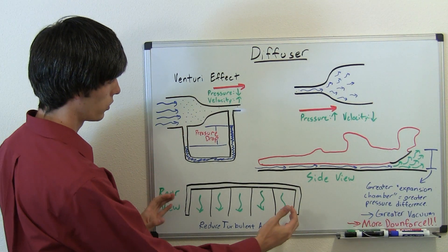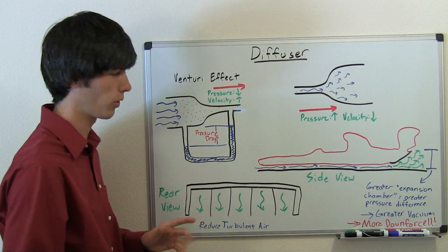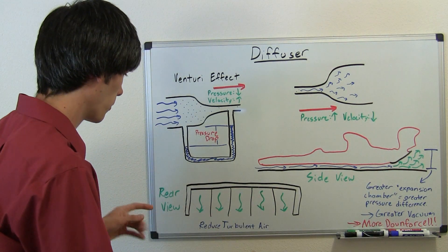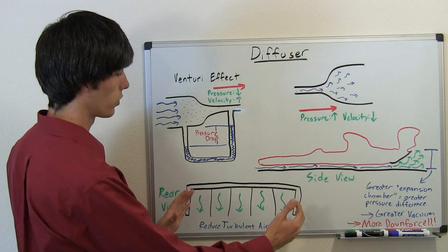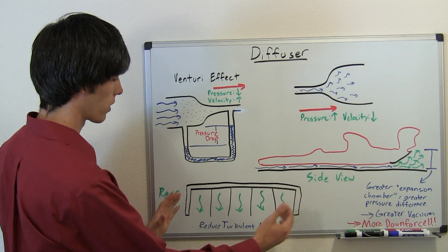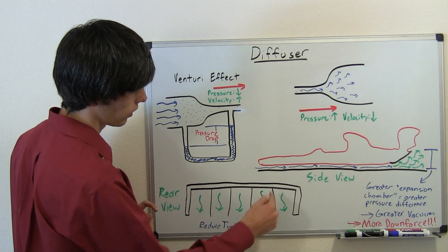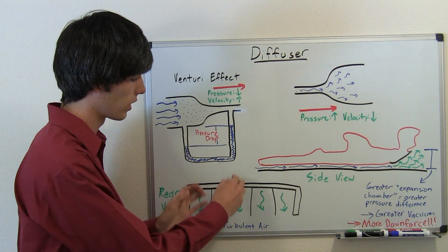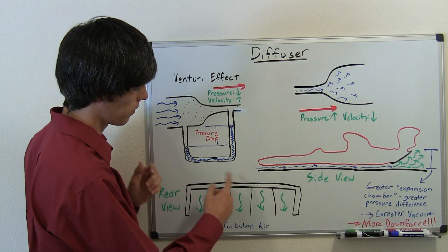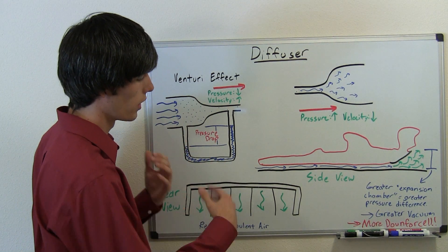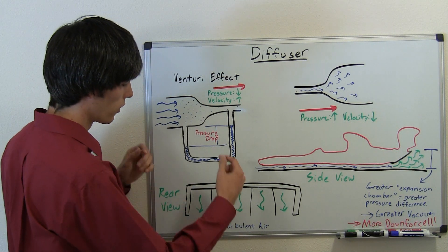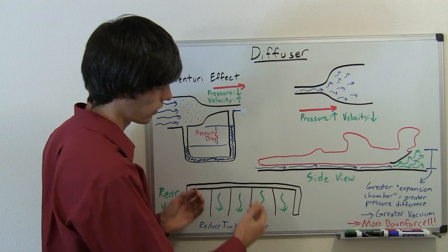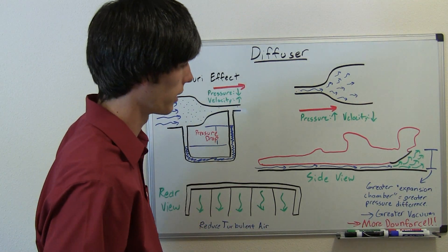If you look at a diffuser from the rear of the car, you'll notice these little dividers, and what those dividers are for is to keep the air moving in a linear fashion. You don't want to let it become turbulent and swirl around, as you'd lose the effects you're gaining. So you reduce turbulent air by putting in these dividers to keep the air flowing smoothly.